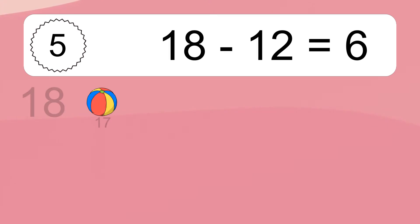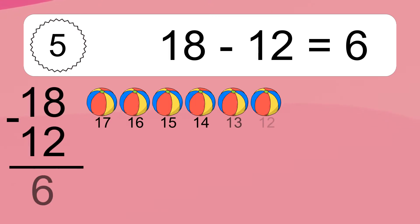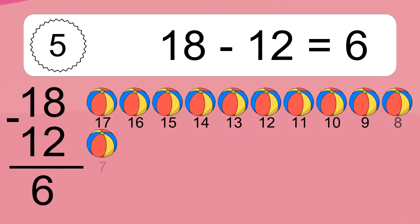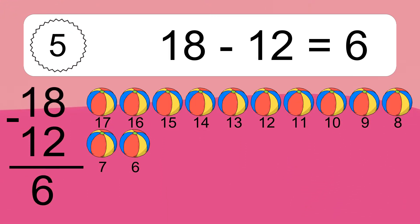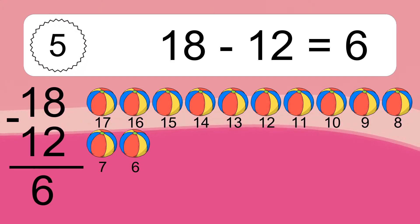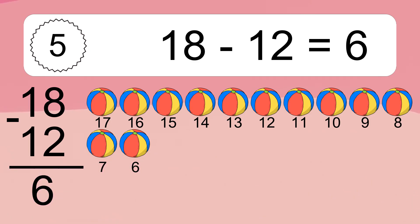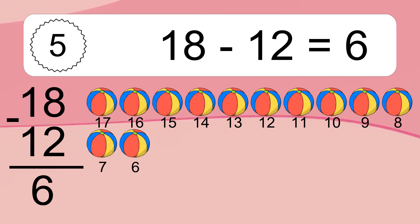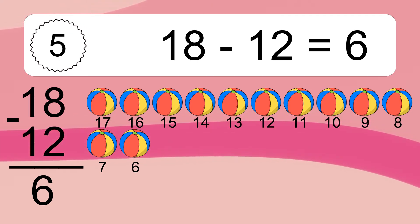18 minus 12 equals what? 18 minus 12 equals 6. Let's count it: 17, 16, 15, 14, 13, 12, 11, 10, 9, 8, 7, 6.